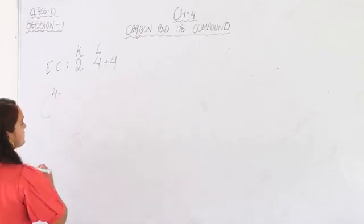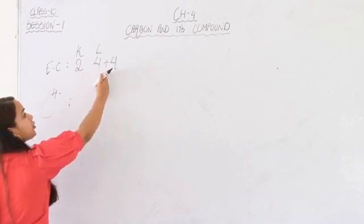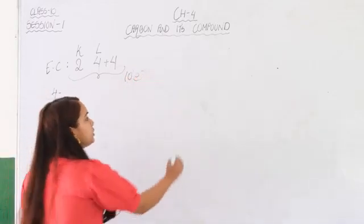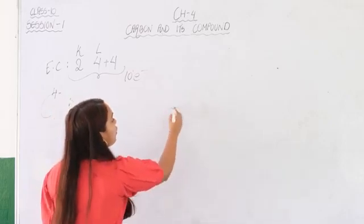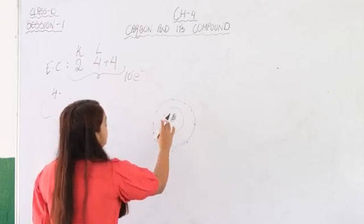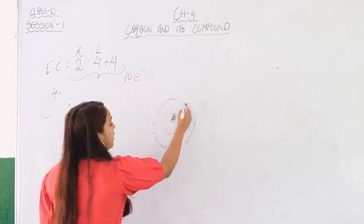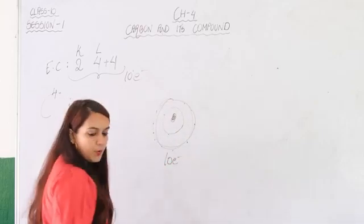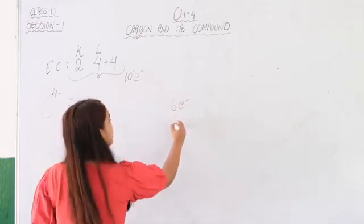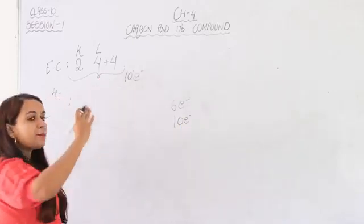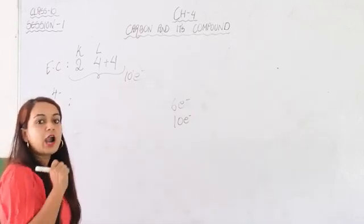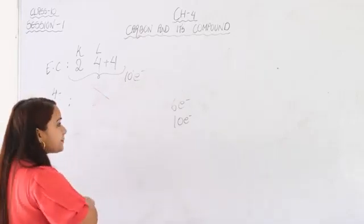If carbon accepts 4 electrons from some other element, it will acquire a negative charge and altogether have 10 electrons. However, the nucleus of carbon is not strong enough to hold 10 electrons — 8 in the second shell and 2 in the first shell. The nucleus of carbon does not have the tendency to hold 10 electrons, so accepting electrons is not possible for carbon.